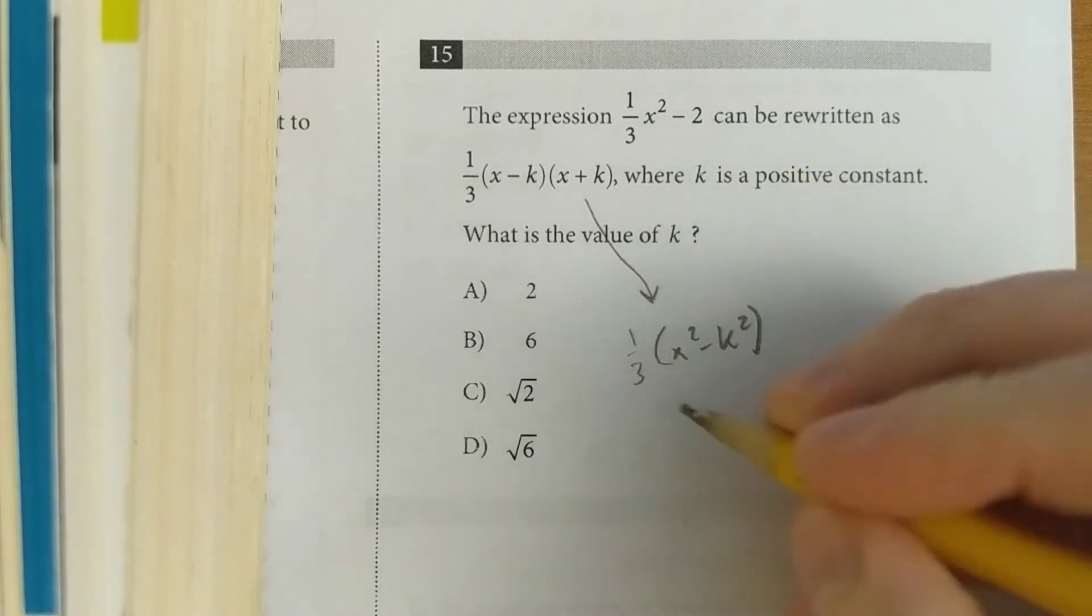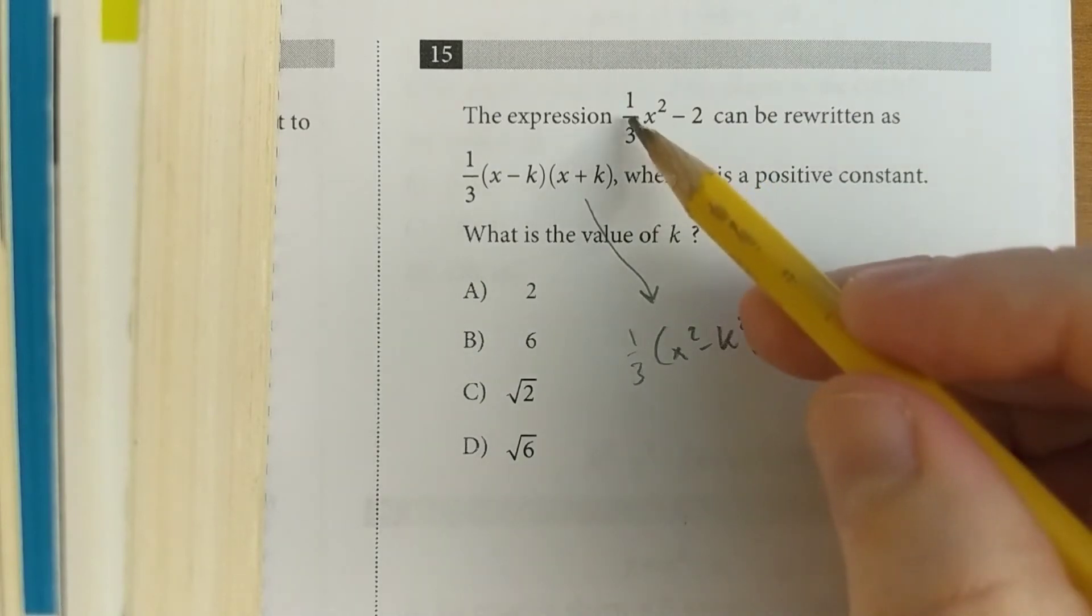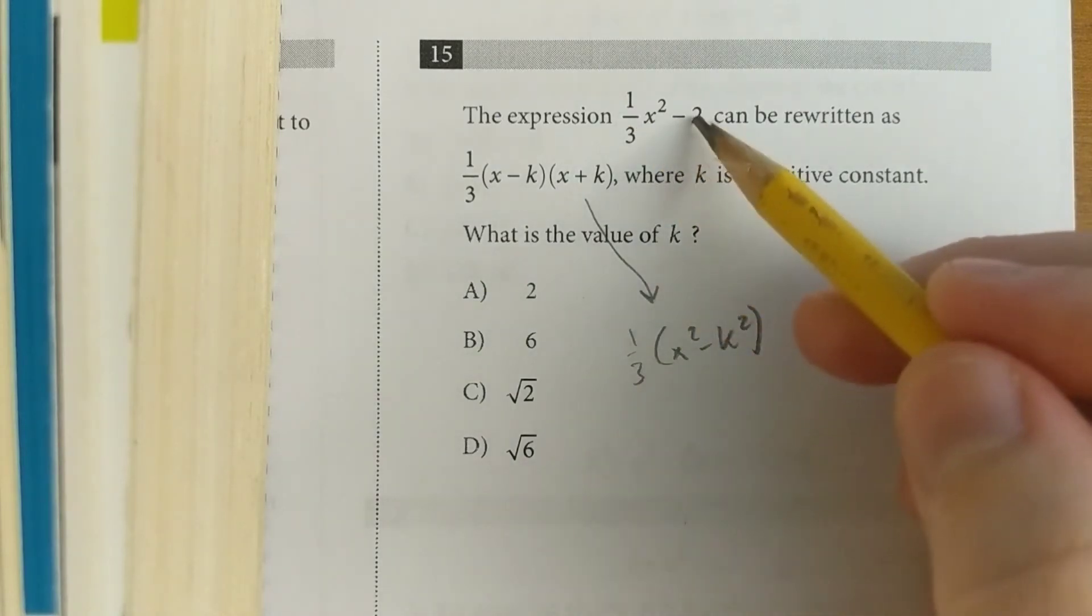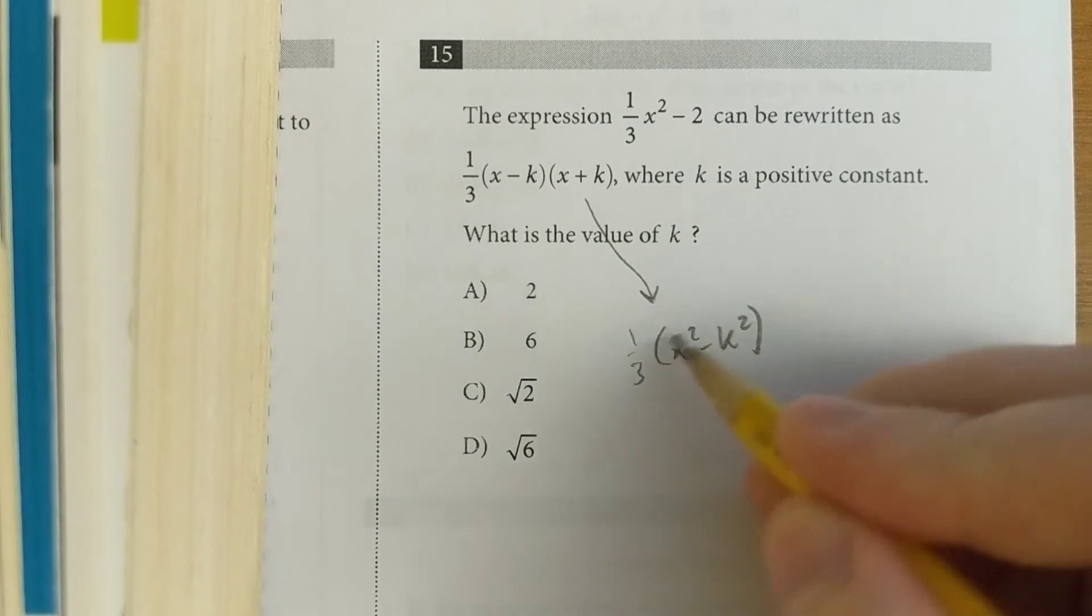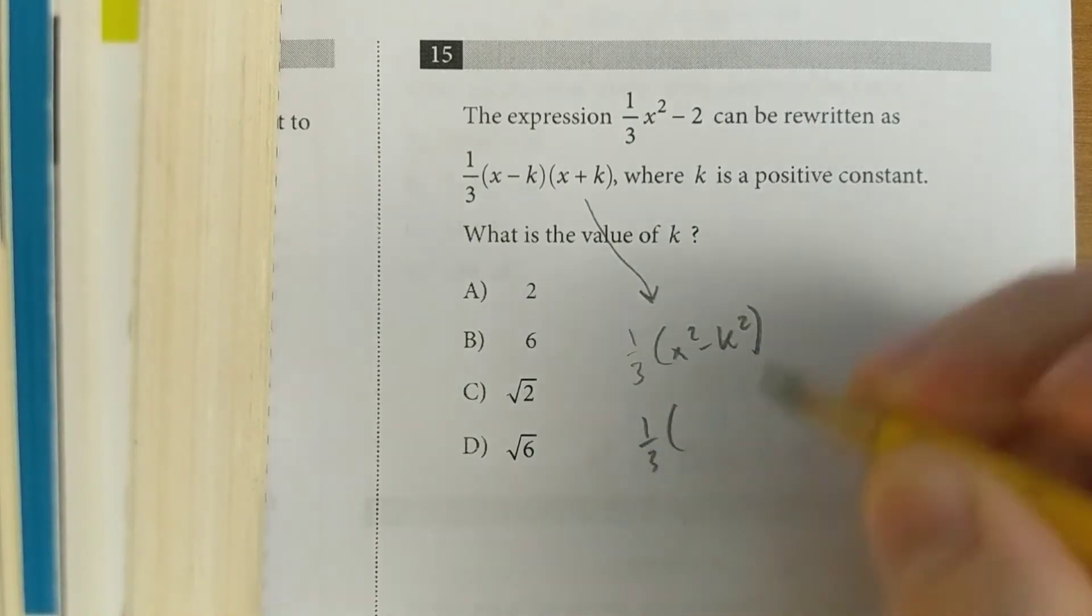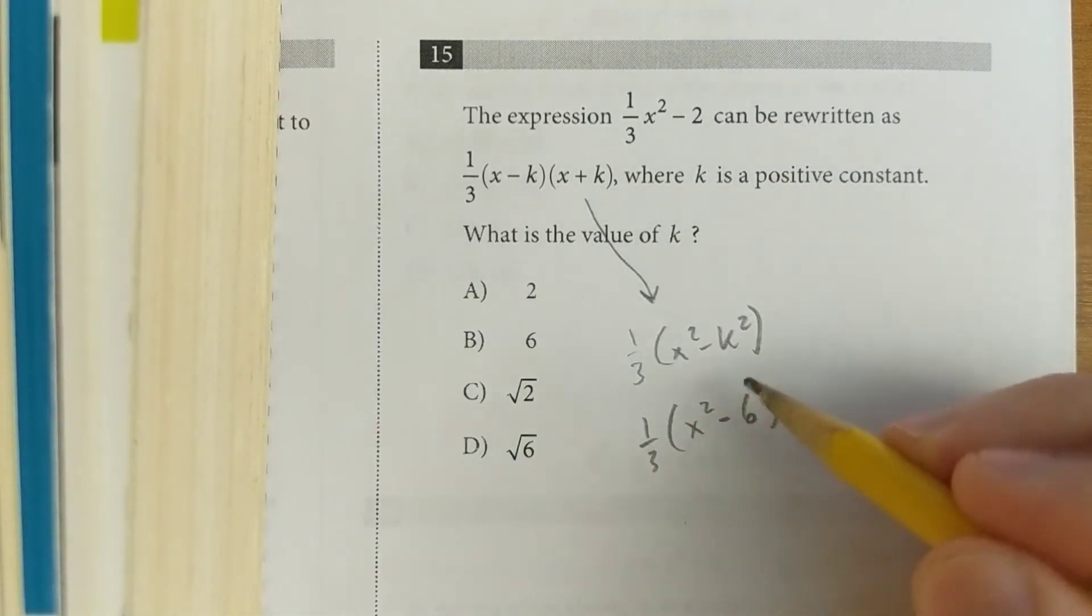That looks pretty similar to this, but you notice that the 1/3 doesn't apply to the -2, whereas it does apply to this whole thing. So we're going to have to rewrite this. Instead of x² - 2, we're going to do x² - 6. And then if you were to distribute it all out, you'd get back to that same thing.